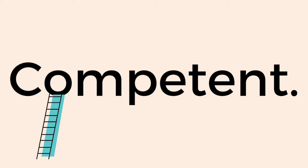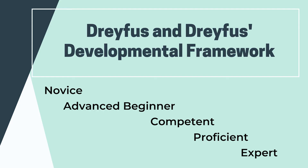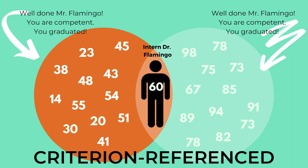The competency levels are certain before you enter; you know what the target is before starting your educational journey. What are the levels? Dreyfus and Dreyfus defined them in their framework: novice, advanced beginner, competent, proficient, expert. If you want to get an MD degree, you have to reach the competent level at minimum and prove that you reached it.